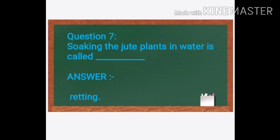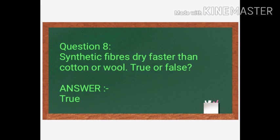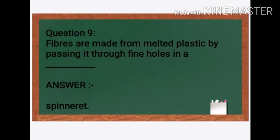Next: Soaking the jute plants in water is called blank. The answer is Retting — R-E-T-T-I-N-G. Next: Synthetic fibers dry faster than cotton or wool — True or False? Answer is True. Synthetic fibers dry much faster than natural fibers. Finally, fibers are made from melted plastics by passing through fine holes in a blank — the answer is a Spinneret — S-P-I-N-N-E-R-E-T. The plastic is passed through holes in a spinneret.